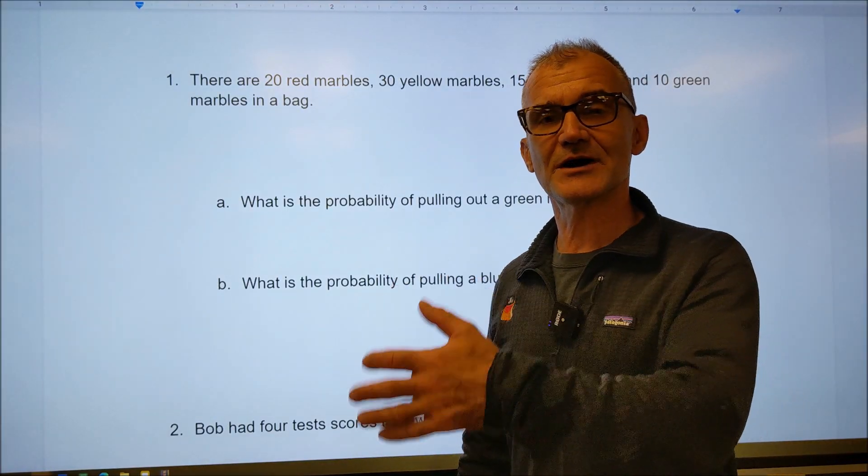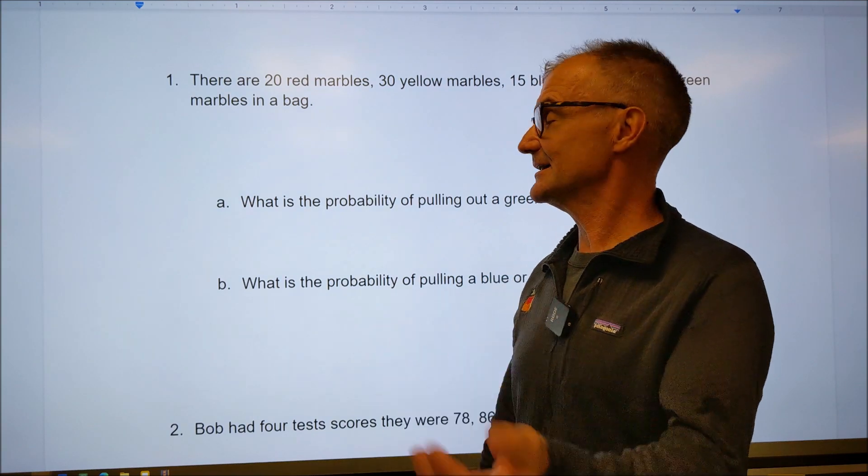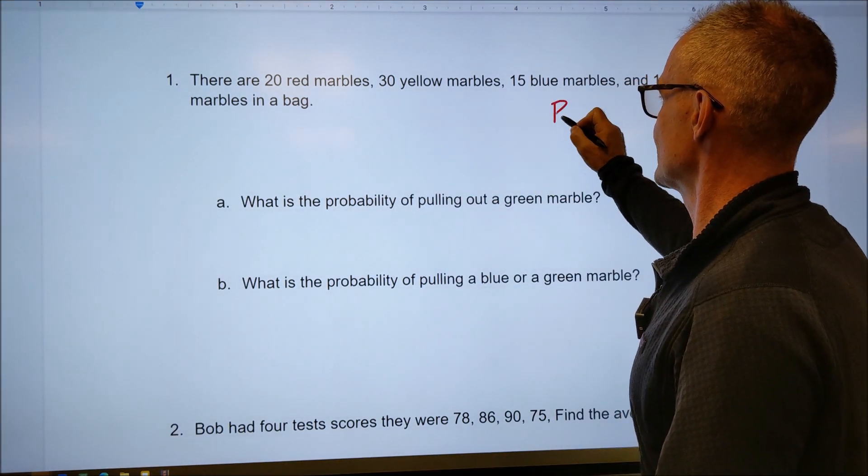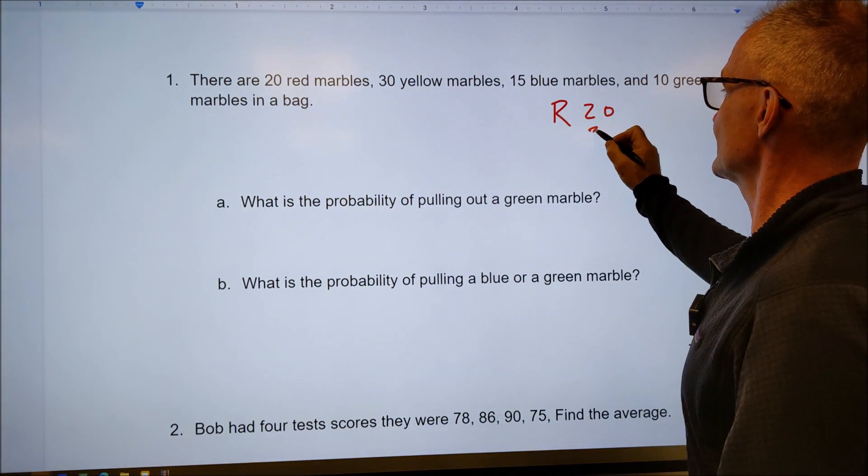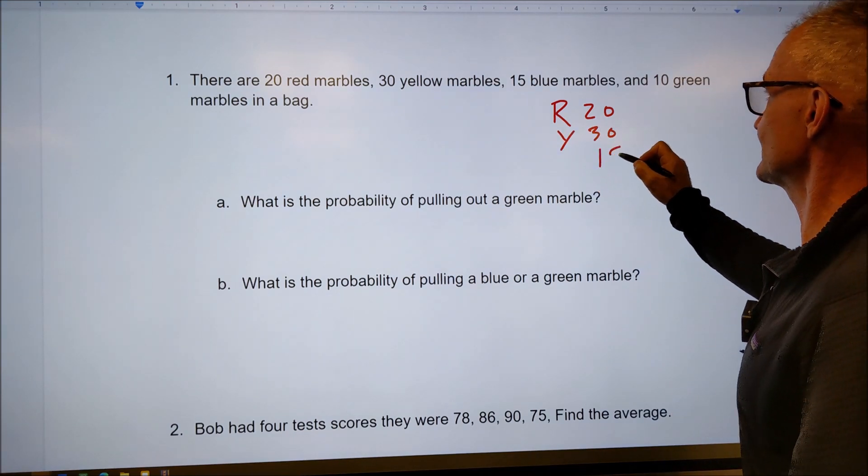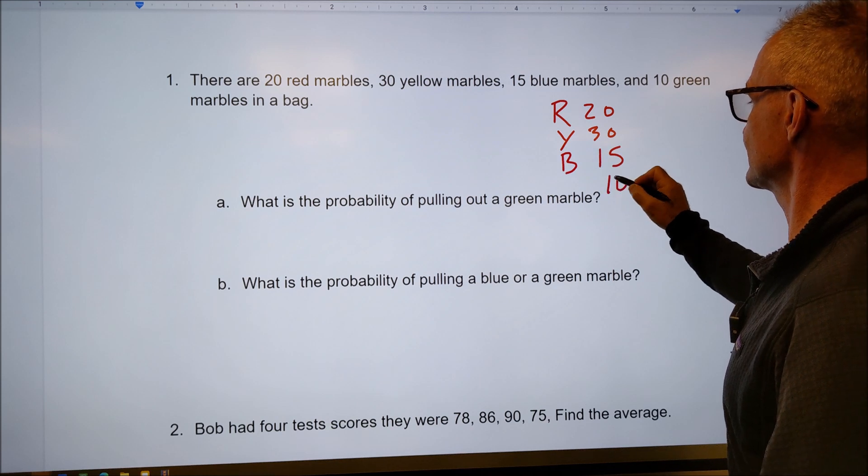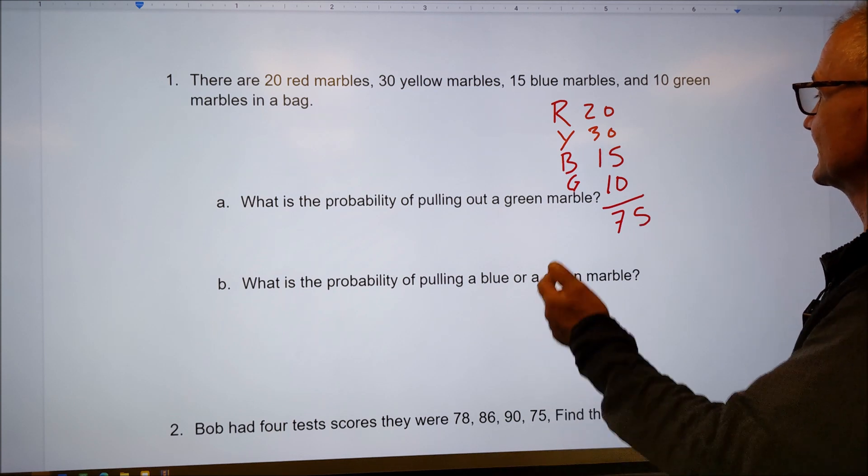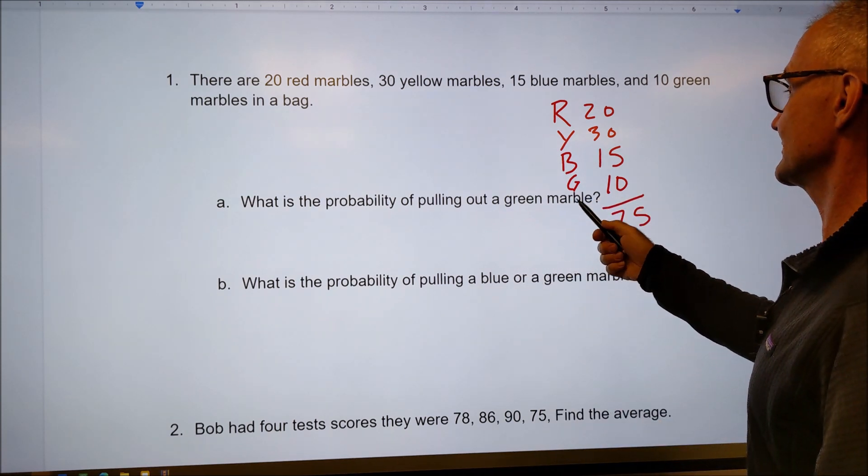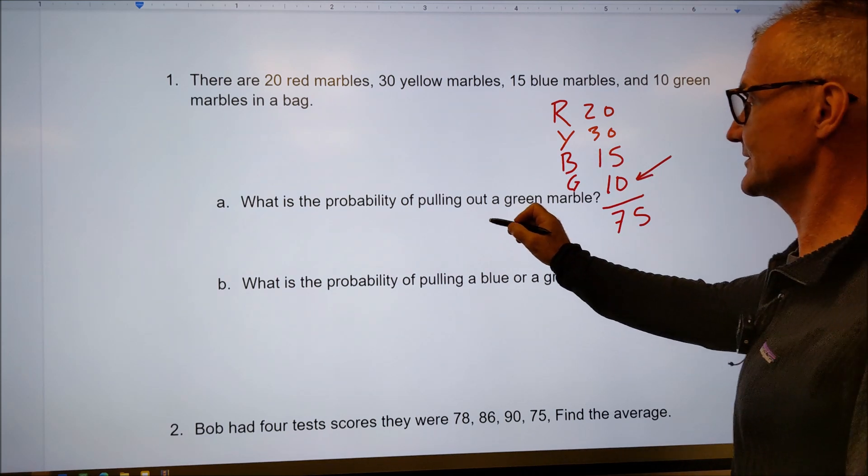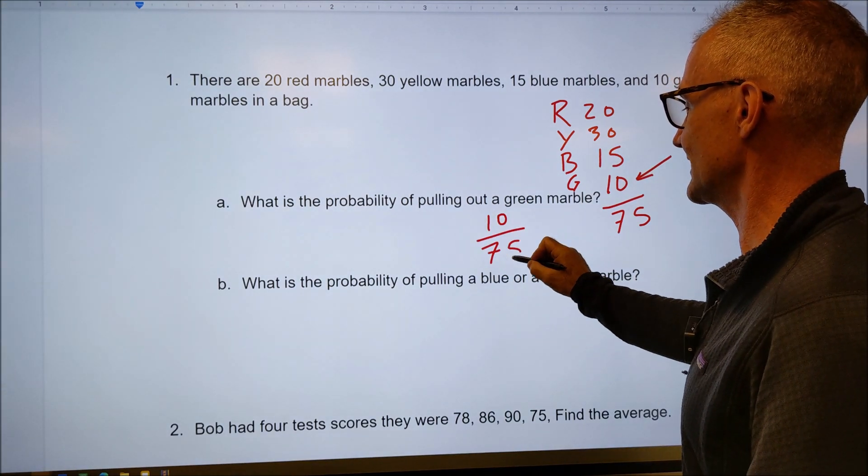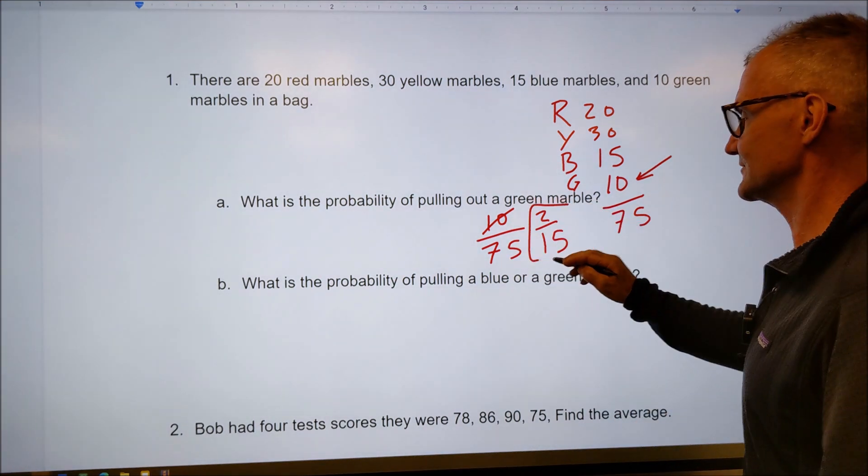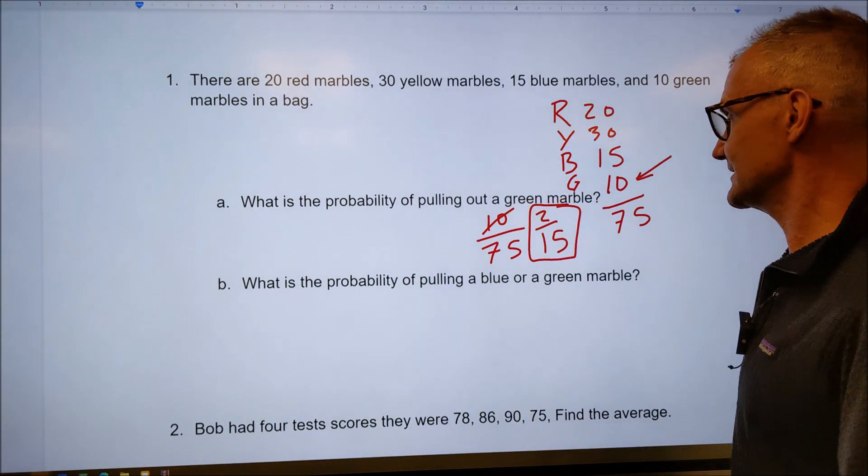Okay, let's do one example problem. Pause the video here. Try this problem on your own, and then watch how I do it. So what I like to do is write out all the possibilities. There are 20 red marbles, so red is 20. There are 30 yellow marbles, 15 blue marbles, and 10 green marbles. The total is 50, 65, 75, so that's my total number of marbles. What is the probability of pulling out a green marble? It's this one right here. The number in the event is 10 out of sample space is 75. Five will go into 10 twice. Five will go into 75, 15 times. There's my reduced fraction. I could convert it to a decimal or a percent, but that's my answer.